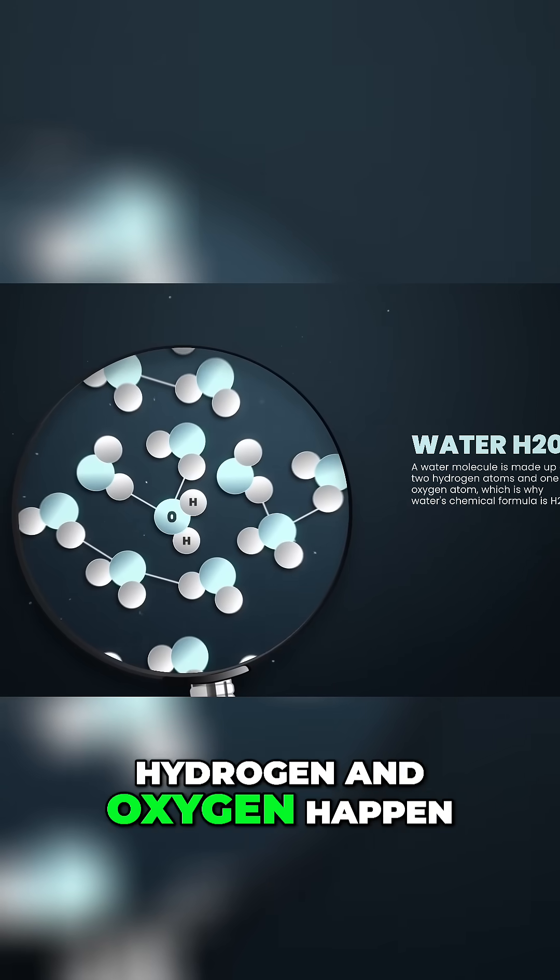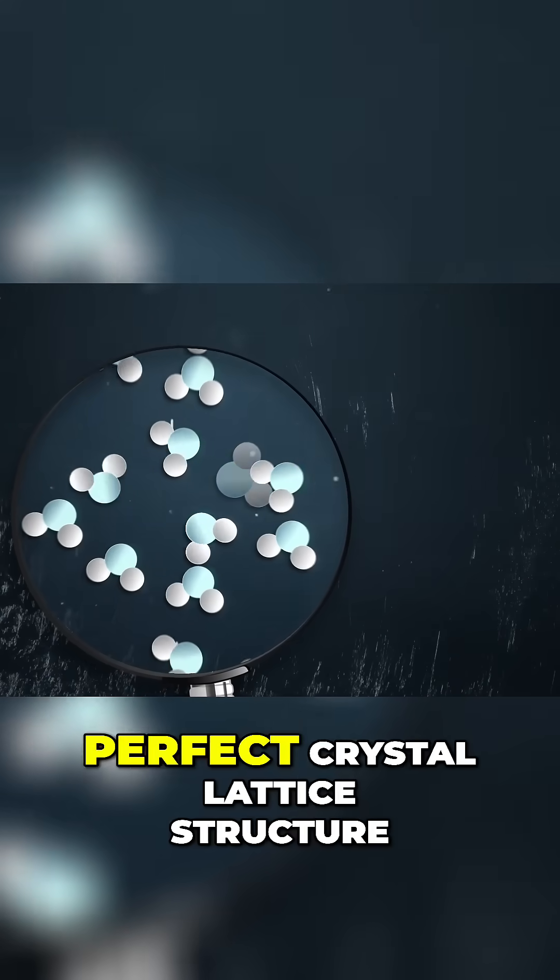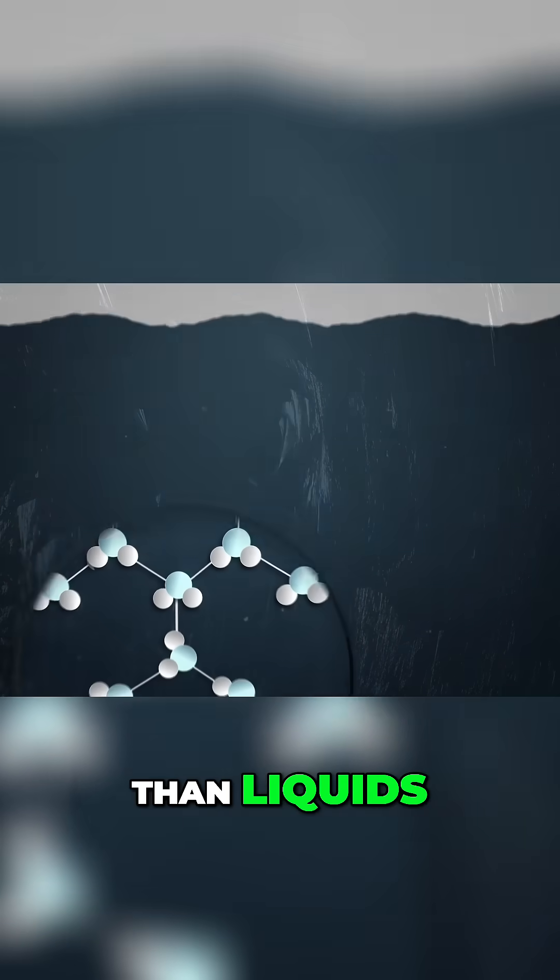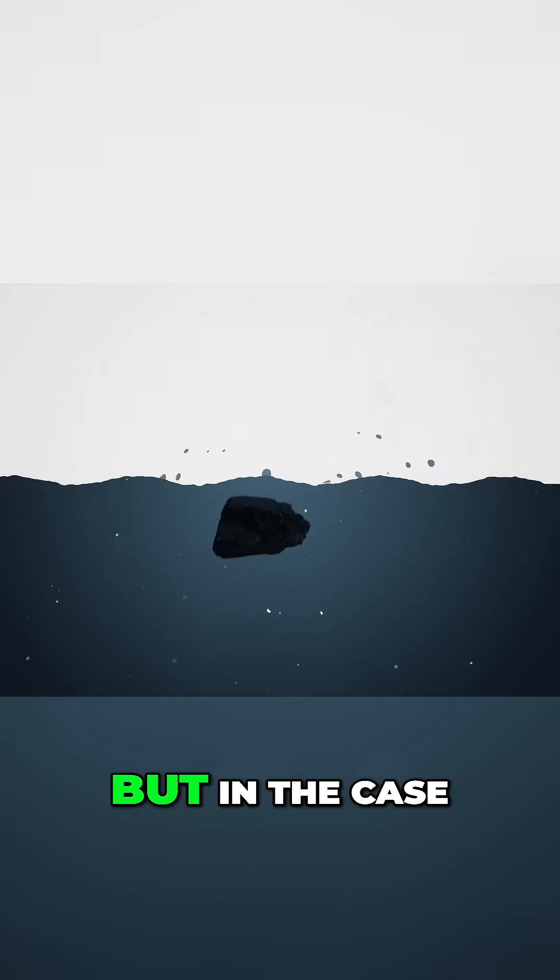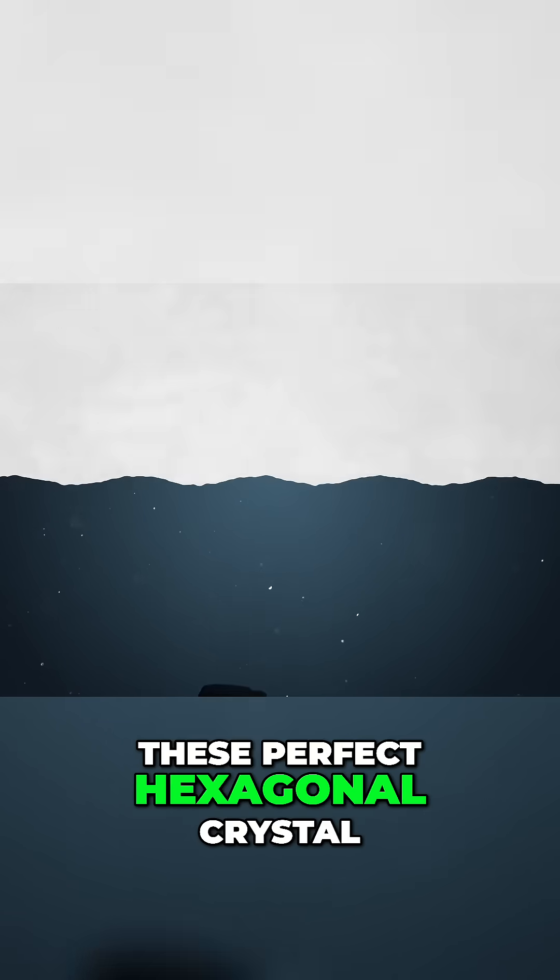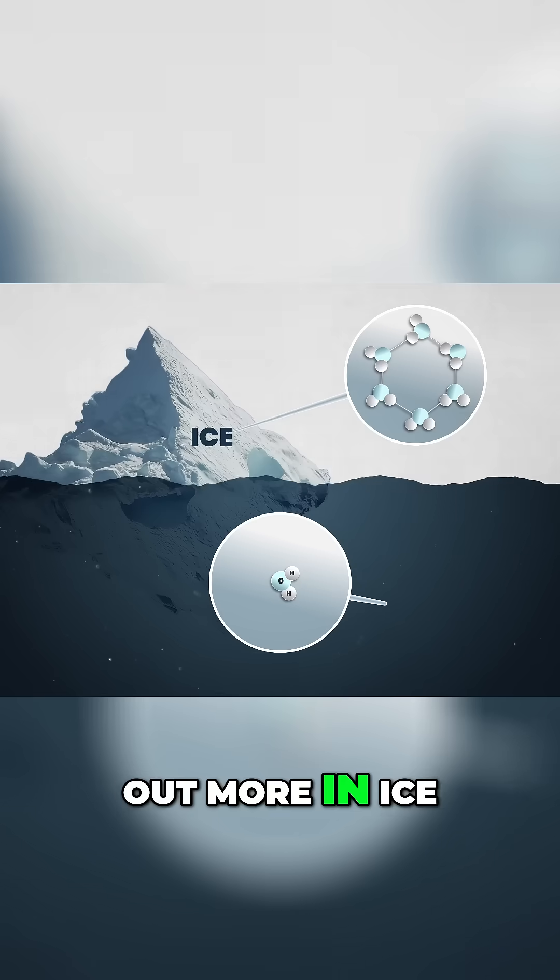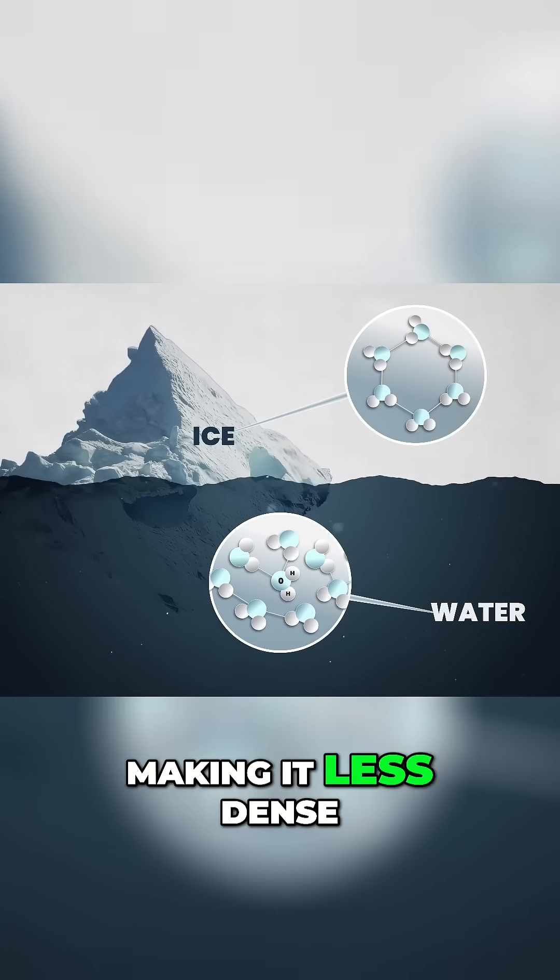Hydrogen and oxygen happen to bond in a way that forms a perfect crystal lattice structure when frozen. Normally, solids are more dense than liquids and so they sink below them. But in the case of water, these perfect hexagonal crystal structures space H2O molecules out more in ice than in water, making it less dense.